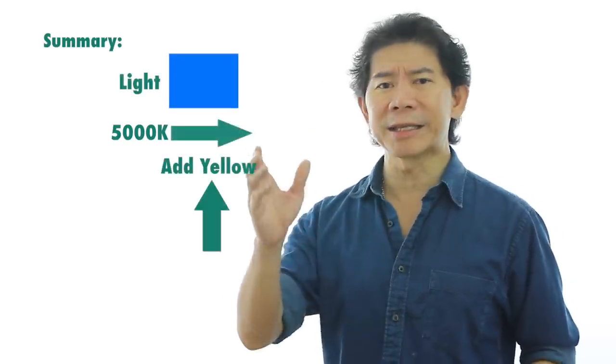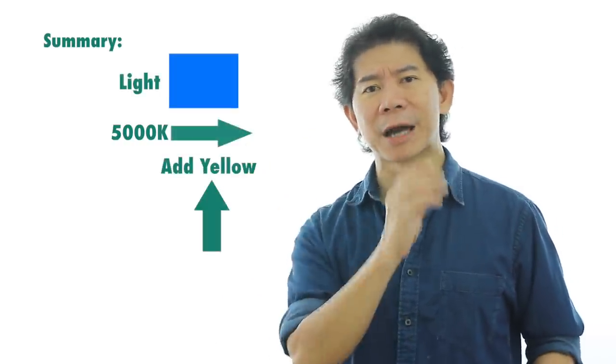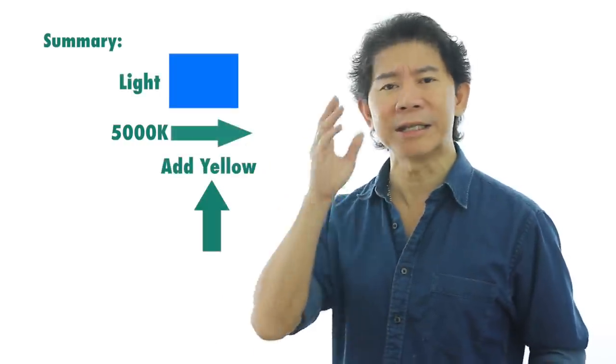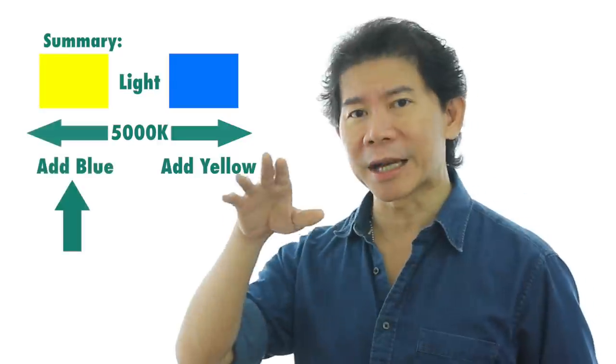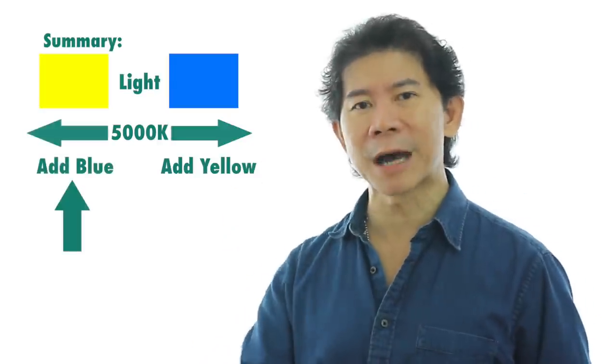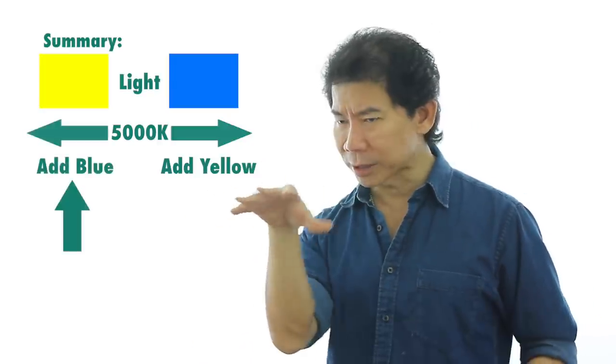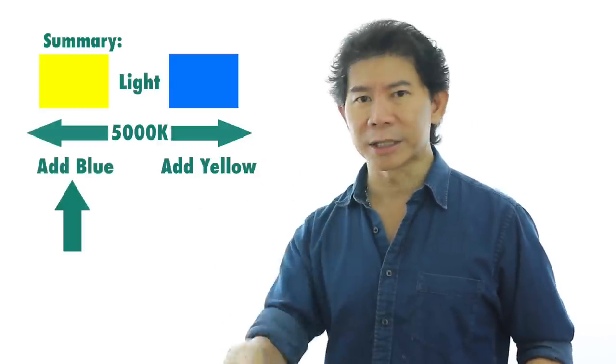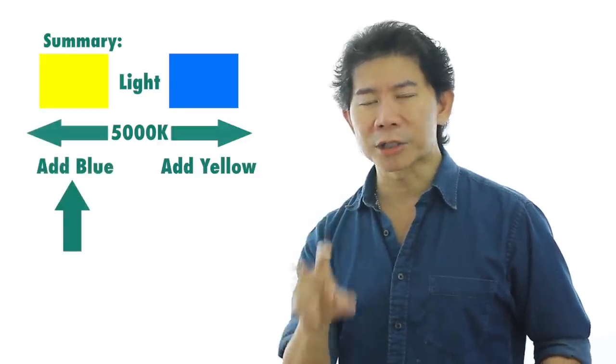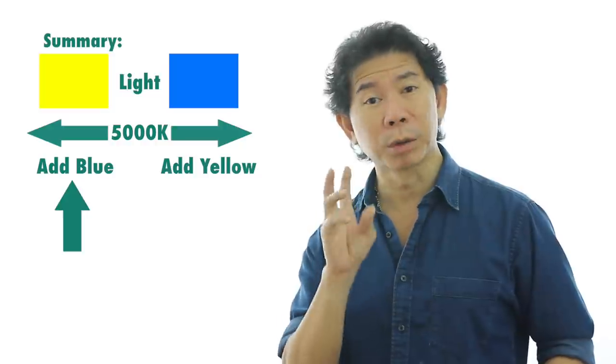So remember this. In summary: 5000 Kelvin is white light. Anything after 5000, you're adding yellow. Anything below 5000 — 3000, 2000 — you are actually adding blue to the shot.